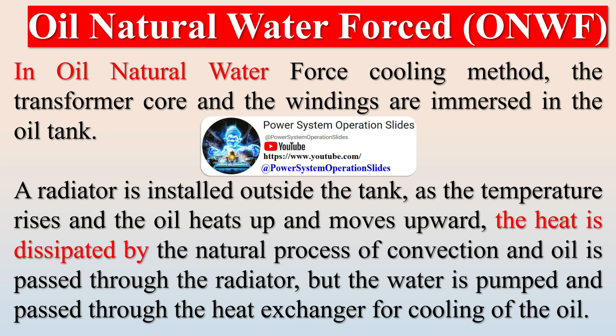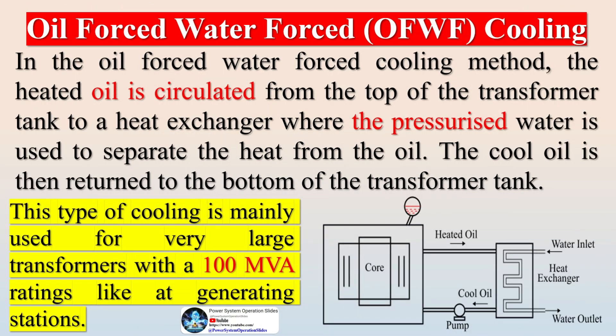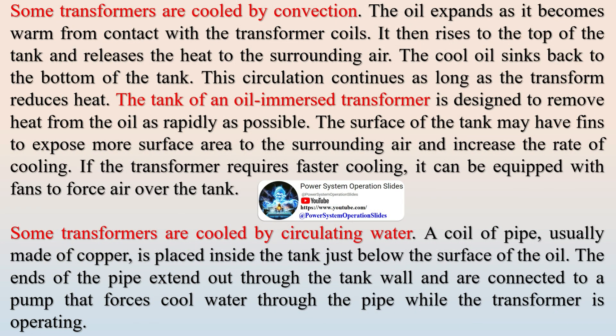Oil immersed water cooled transformers use either Oil Natural Water Forced (ONWF) or Oil Forced Water Forced (OFWF) methods. In ONWF cooling, the transformer core and windings are immersed in an oil tank; a radiator is installed outside, and as the oil heats and moves upward by convection it passes through the radiator, while water is pumped through a heat exchanger to cool the oil. In OFWF cooling, heated oil is circulated from the top of the tank to a heat exchanger where pressurized water separates the heat from the oil, and cool oil is returned to the bottom. This is mainly used for very large transformers rated around 100 MVA, such as those in generating stations.